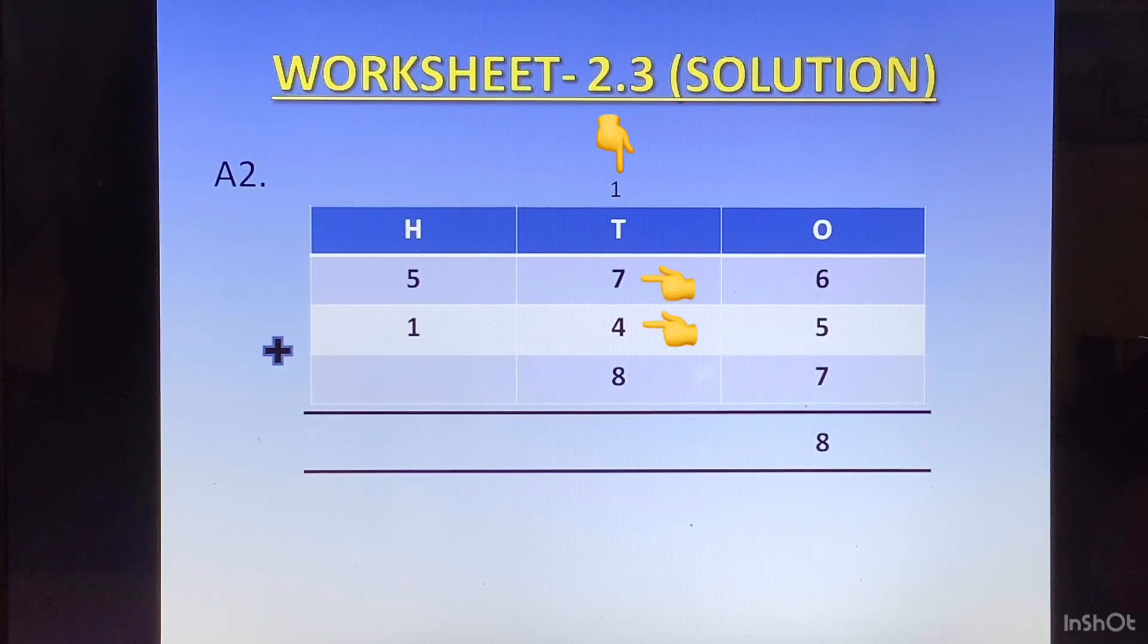In the tens column we have 7 plus 4 is 11, plus 8 is 19, plus 1 is 20. 2 will go at the top of hundreds column and 0 at the bottom of tens column. Now in the hundreds column we have 5 plus 1 is 6, plus 2 of the carry is 8. So the answer becomes 808.